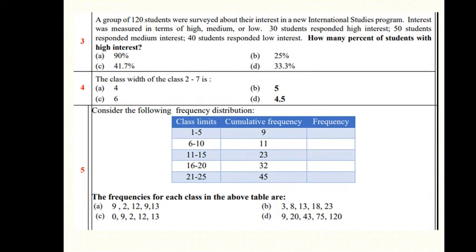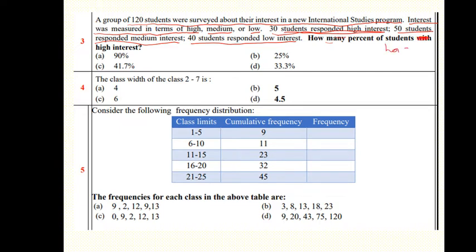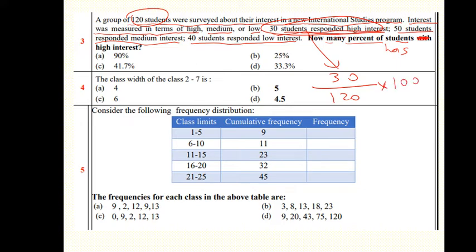A group of 120 students were surveyed about their interest in a new international studies program — high, medium, or low. 30 students responded high interest, 50 responded medium, and 40 responded low. What percentage of students had high interest? It's 30/120 × 100 = 25 percent.